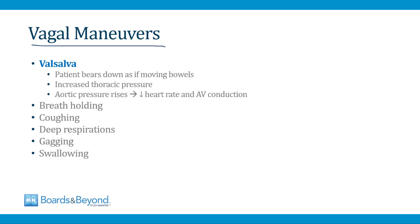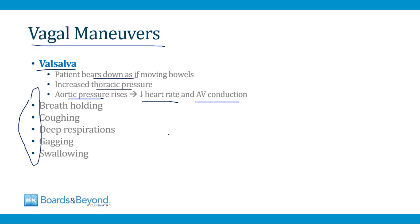Vagal maneuvers are another way to break AVNRT by increasing tone through the vagus nerve. One example is the Valsalva maneuver, where the patient bears down as if moving their bowels — this increases thoracic pressure, presses on the aorta, slightly increases aortic pressure, and the brain responds with increased parasympathetic output that slows heart rate and AV node conduction. Many patients with AVNRT learn to perform these maneuvers themselves, feeling palpitations and doing a maneuver to make them go away.